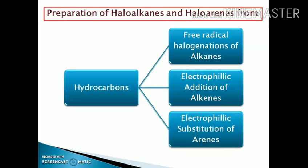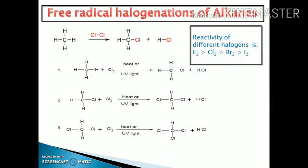We can prepare both Haloalkanes and Haloarenes from hydrocarbons by three ways: the first is free radical halogenation of alkane, the second is electrophilic addition of alkene, and the third is electrophilic substitution of arenes. In free radical halogenation, formation of alkyl bromide and alkyl chloride is possible. However, the radicals are highly reactive intermediates that result in the formation of a mixture of products, causing difficulty in isolation of a single product.